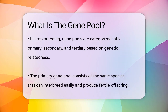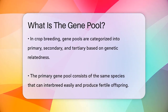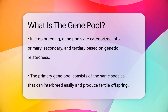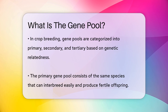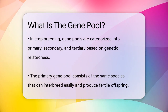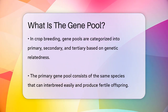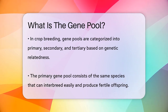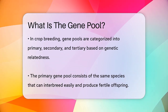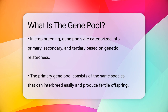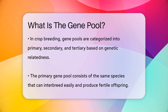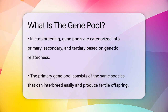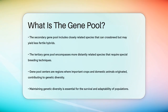In crop breeding, the concept of gene pools is very important. Plant breeders categorize crops into primary, secondary, and tertiary gene pools based on how closely related they are. The primary gene pool includes members of the same species that can easily interbreed and produce fertile offspring. The secondary gene pool includes closely related species that can crossbreed but may produce less fertile hybrids. The tertiary gene pool includes more distantly related species that require special techniques to breed.